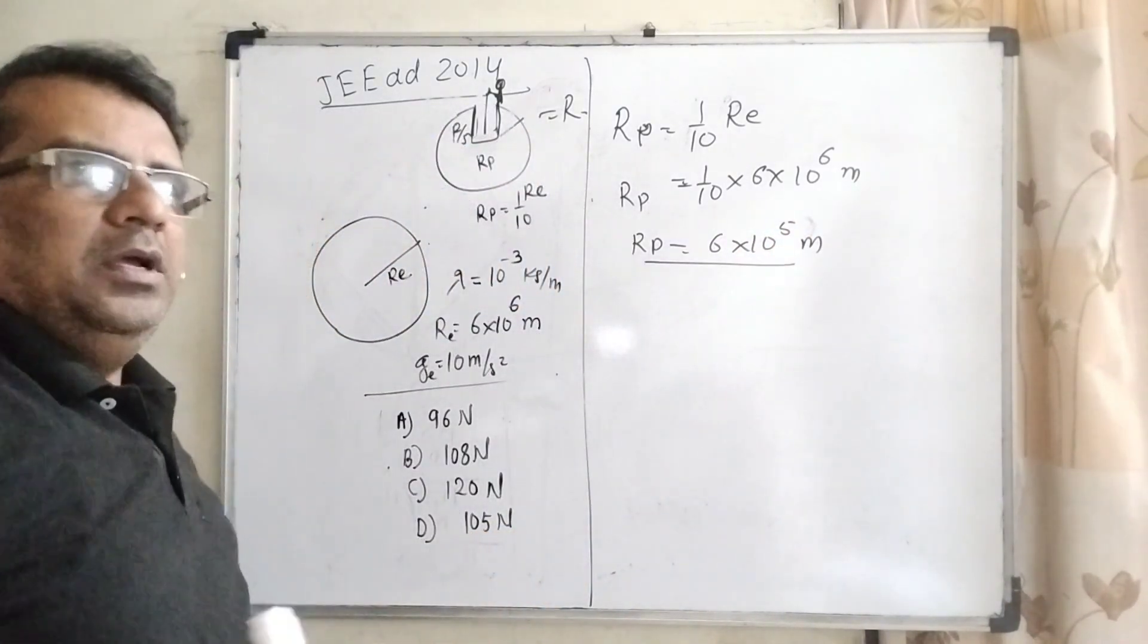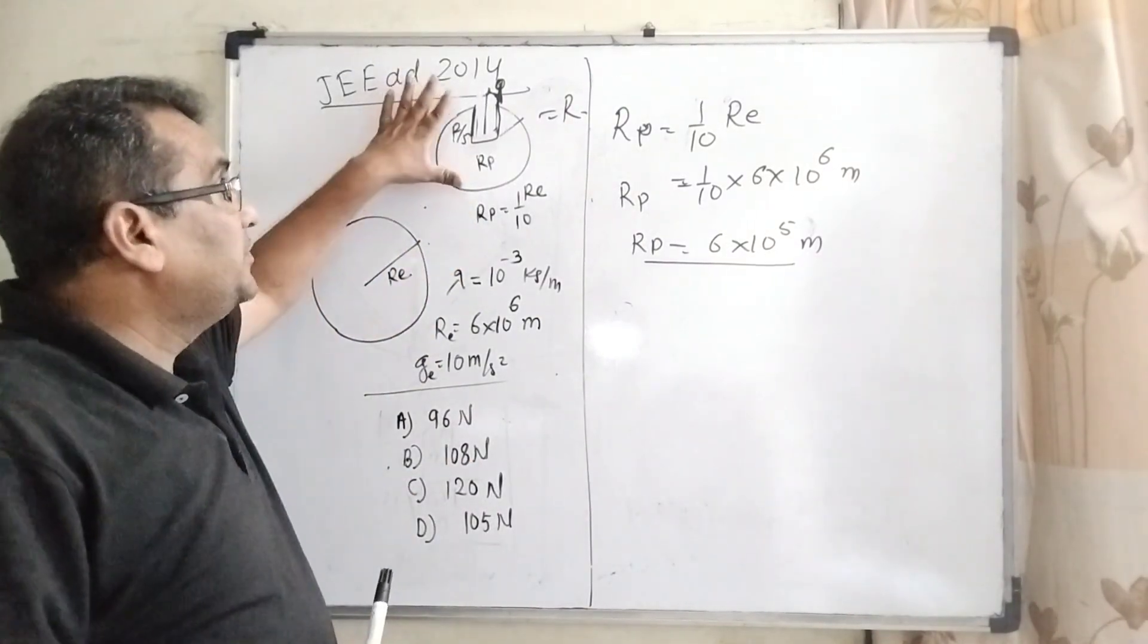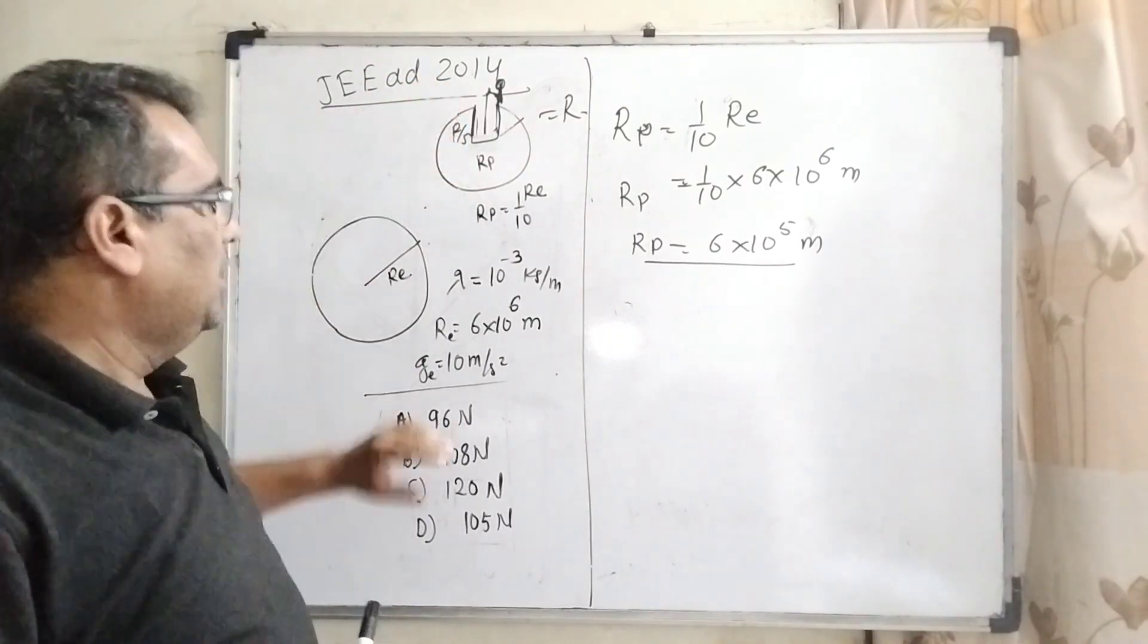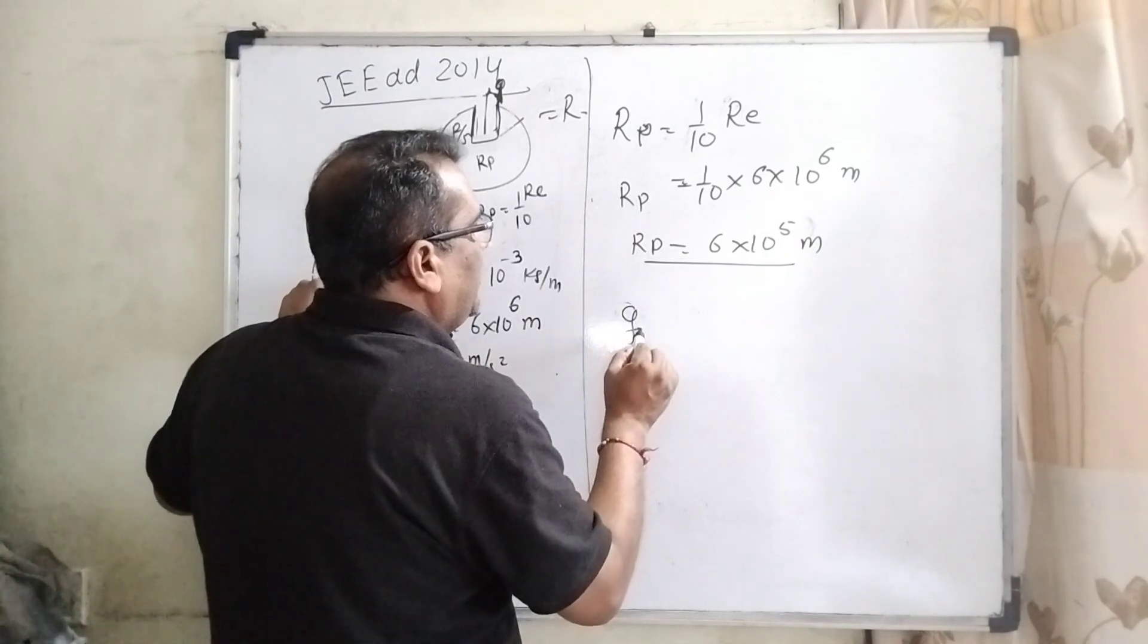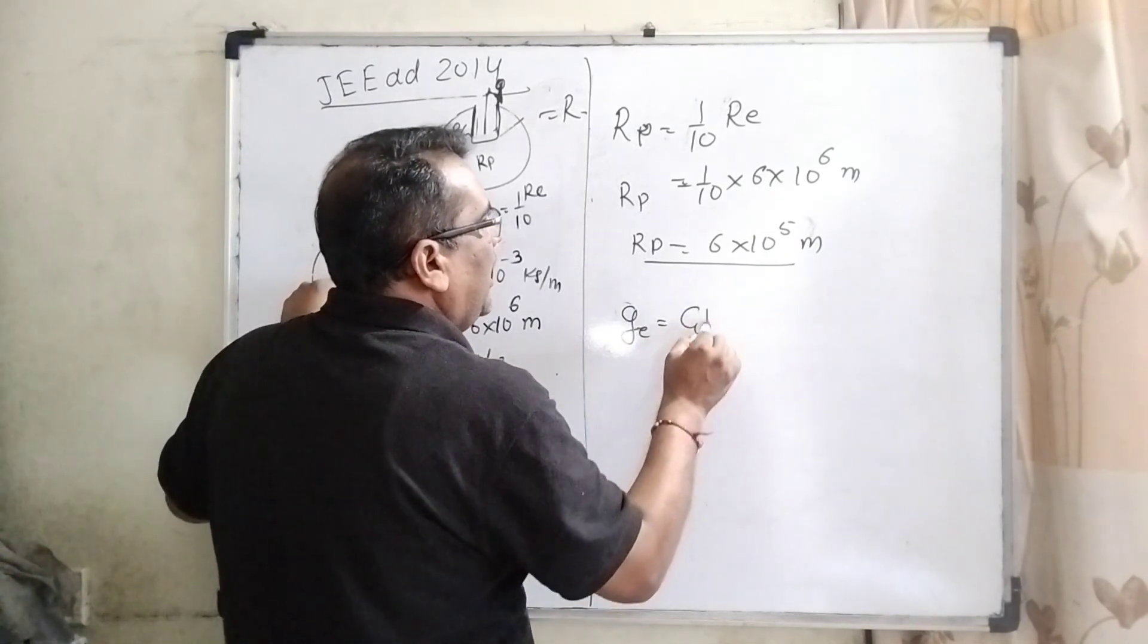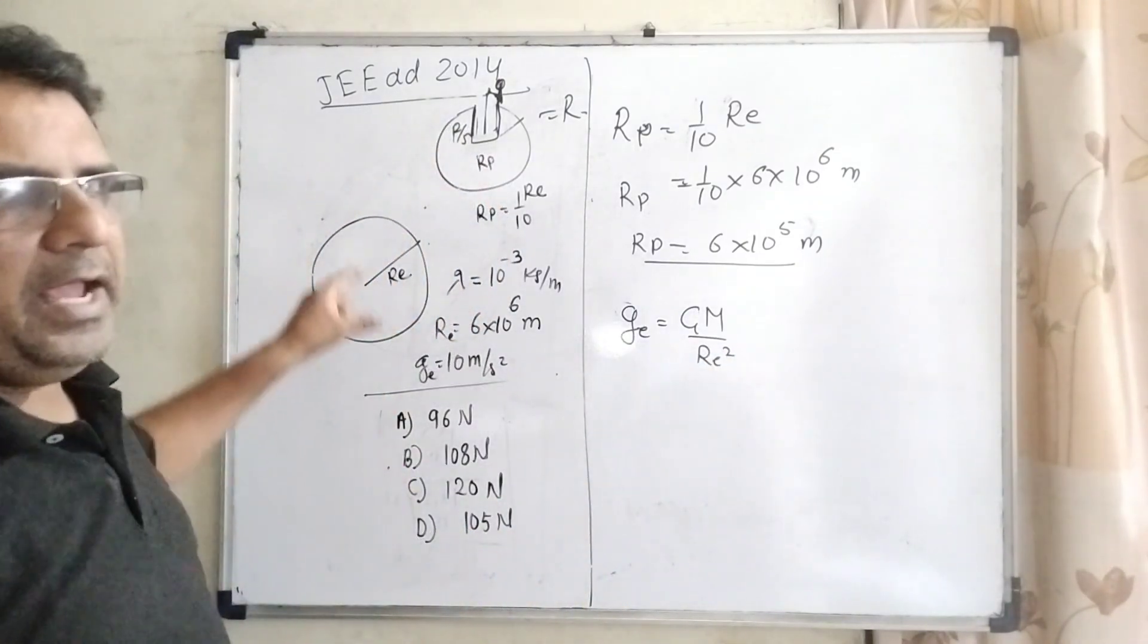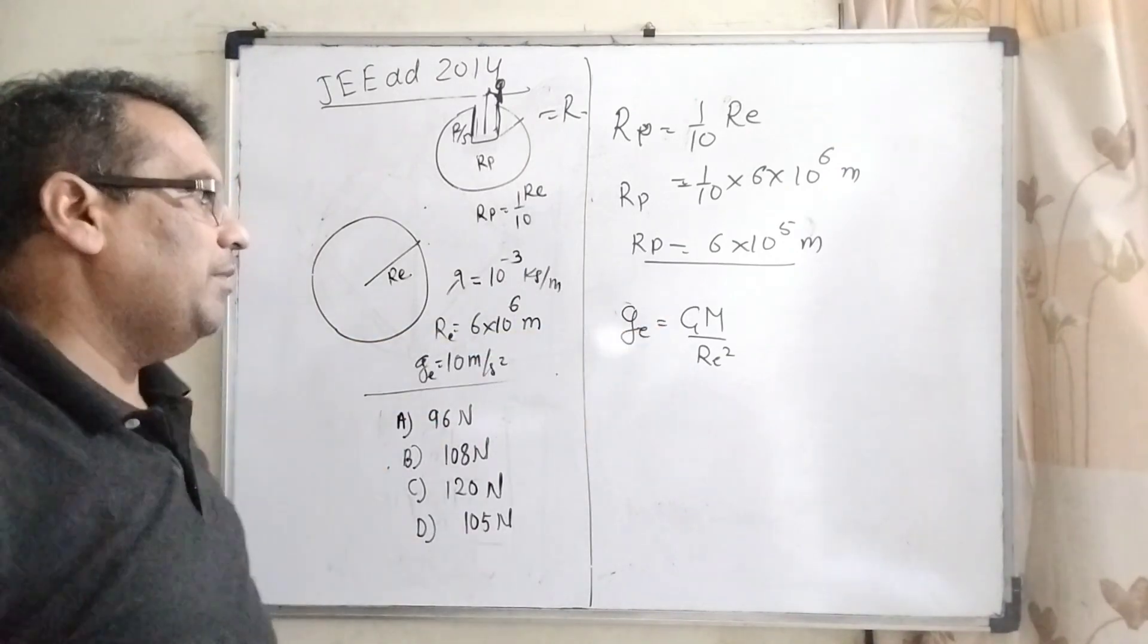Okay. Then, now in the second step we have to find out acceleration due to gravity at this given planet. Here we know that acceleration due to gravity at the Earth is G M upon Re square.